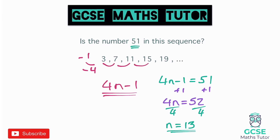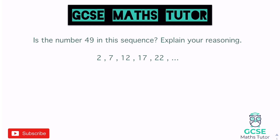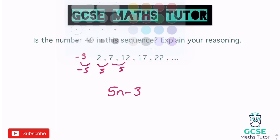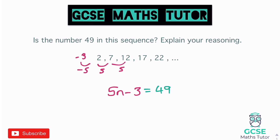Now: is the number 49 in a different sequence, and explain your reasoning? Looking at the sequence 2, 7, 12, 17, 22 — all numbers end in 2 or 7, so 49 (ending in 9) can't be in it. But let's prove it with algebra. The sequence goes up in 5s, so nth term is 5n. Going back 5 from 2 gives minus 3, so it's 5n minus 3. Setting that equal to 49: adding 3 gives 5n equals 52.